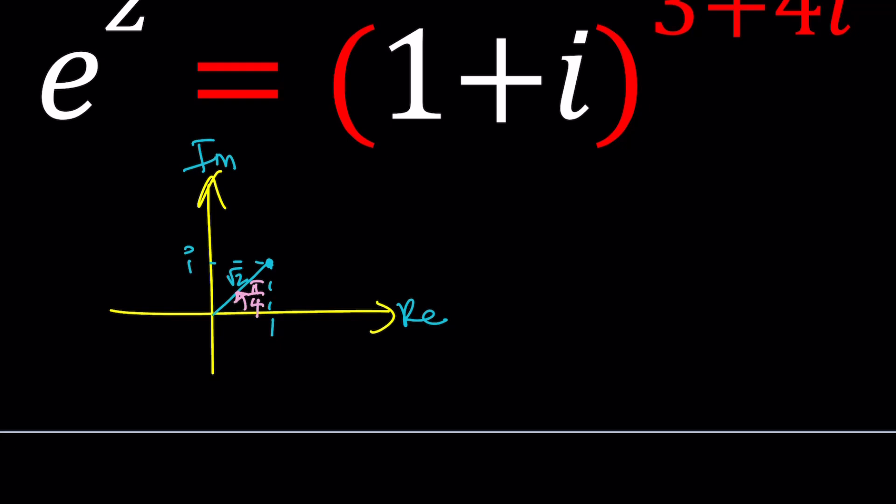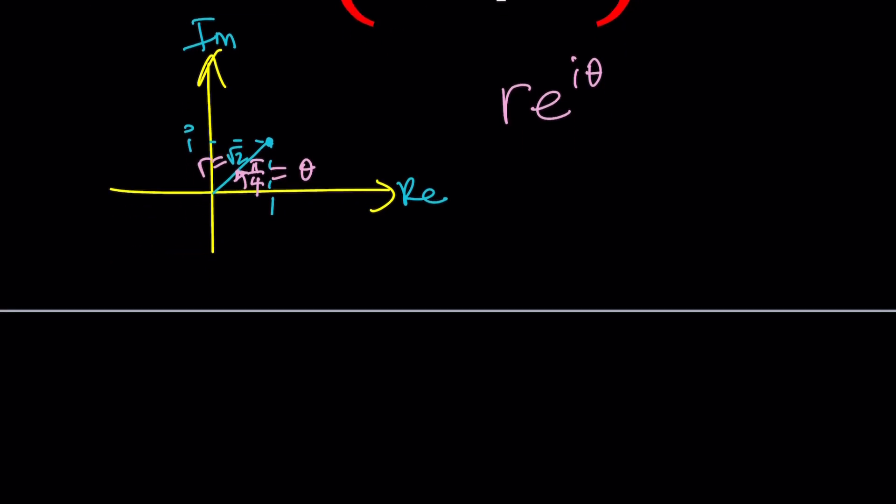The argument in this case is going to be pi over 4 because this is an isosceles right triangle. So we can basically write any number as r times e to the i theta, theta being the argument, and r being the modulus. So we got everything we need. Let's go ahead and write 1 plus i as root 2 times e to the power i times pi over 4.